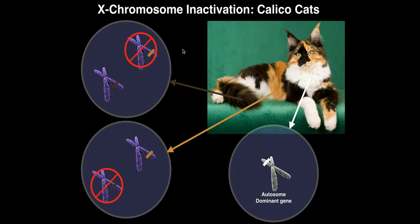All chromosomes have genes on them, and one of the most interesting sets of chromosomes to talk about are the sex chromosomes — typically denoted number 23 in humans — and those are the X and Y chromosomes. In mammals, particularly humans and cats, females have the genotype XX, meaning two X chromosomes, and males have the genotype XY, meaning one X and one Y chromosome.